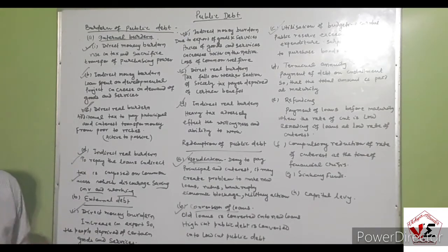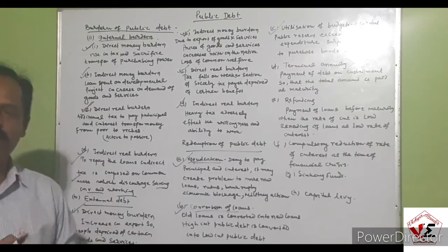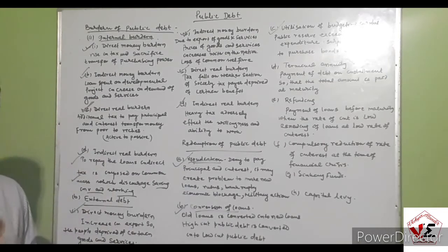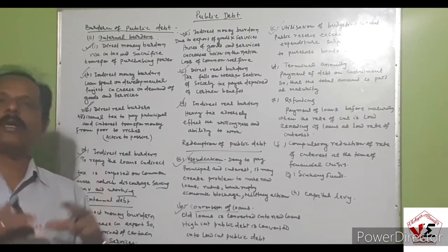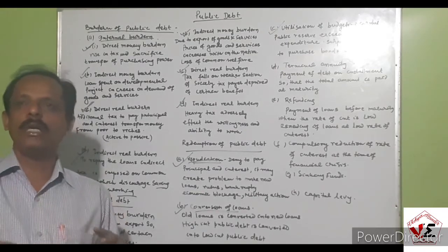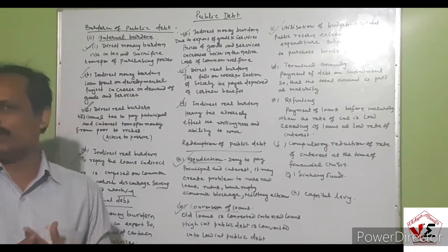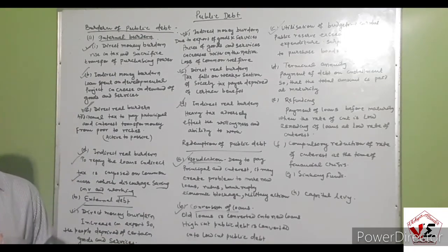Another method is terminal annuity. If it is difficult for the nation to pay the entire public debt at once, the government negotiates with the particular creditor party and converts the debt into a terminal annuity. At particular intervals, the government pays installments, and by maturity the total debt is paid. This is a convenient method with no extra burden on the economy.